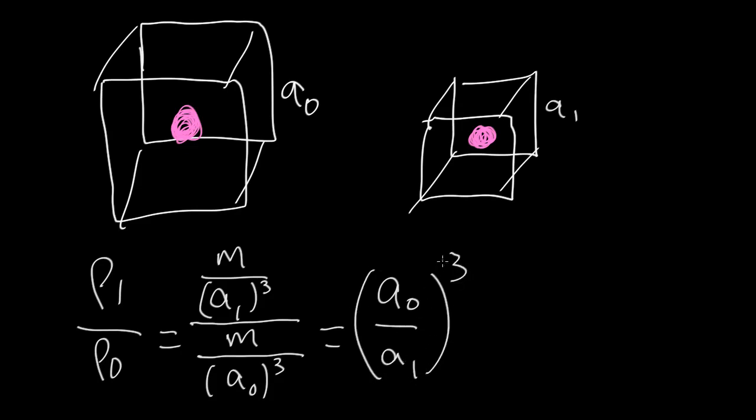In other words, the density of the universe evolves inversely with the cube of the scale factor.